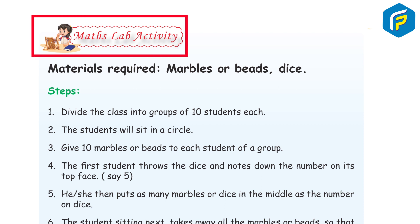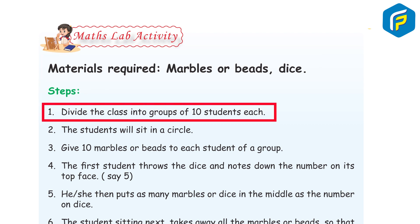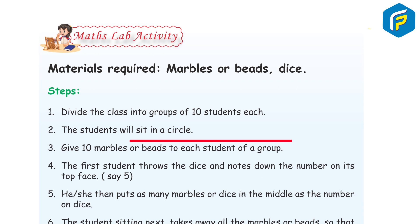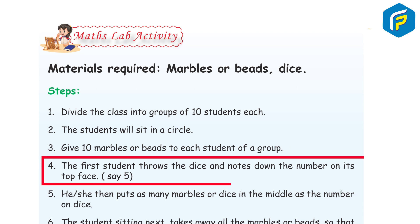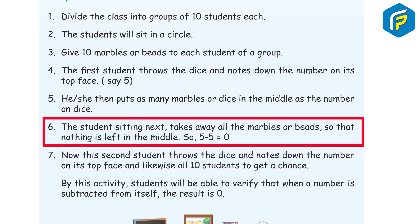Math slab activity. Materials required: marbles or beads, dice. Steps: 1. Divide the class into groups of 10 students each. 2. Students sit in a circle. 3. Give 10 marbles or beads to each student. 4. The first student throws the dice and notes the number on its top face. 5. The student puts that many marbles in the middle. 6. The next student takes away all the marbles so nothing is left in the middle.